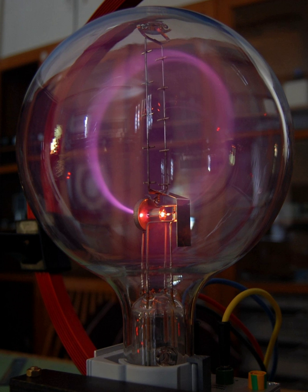Cathode rays are invisible, but their presence was first detected in early vacuum tubes when they struck the glass wall of the tube, exciting the atoms of the glass and causing them to emit light, a glow called fluorescence.